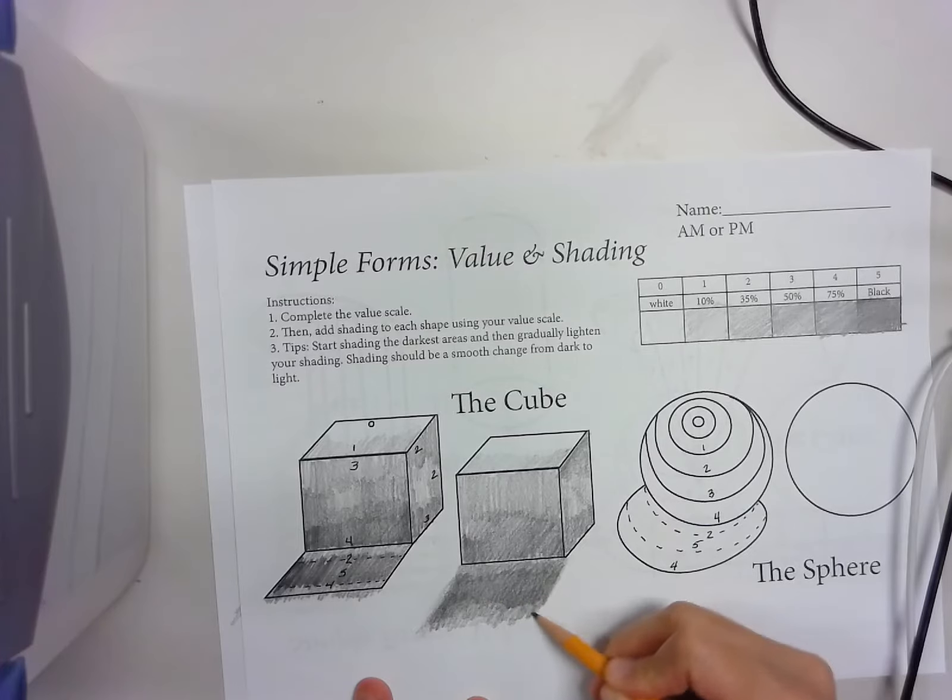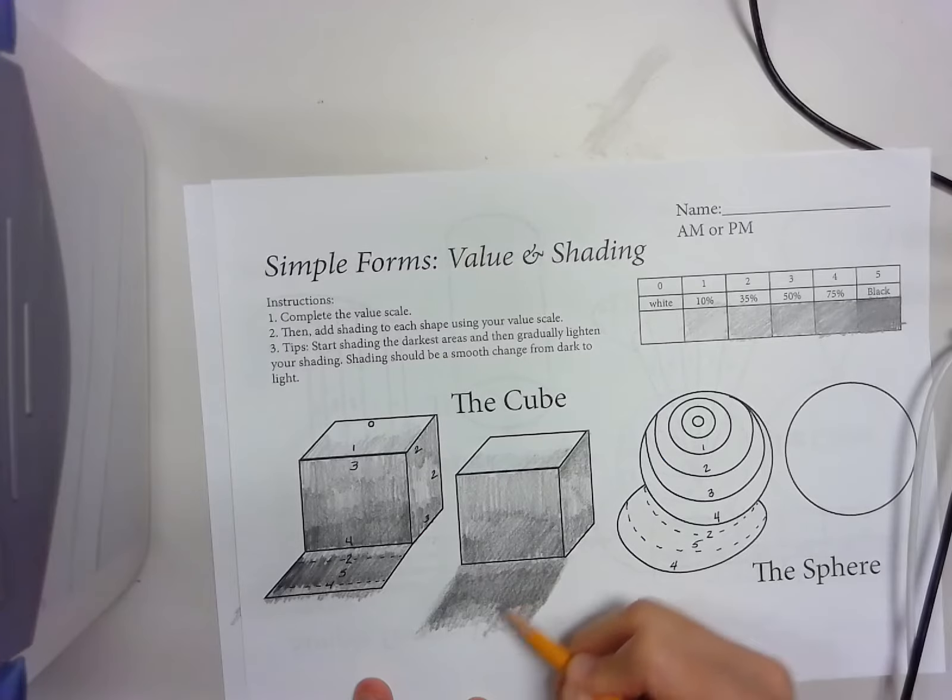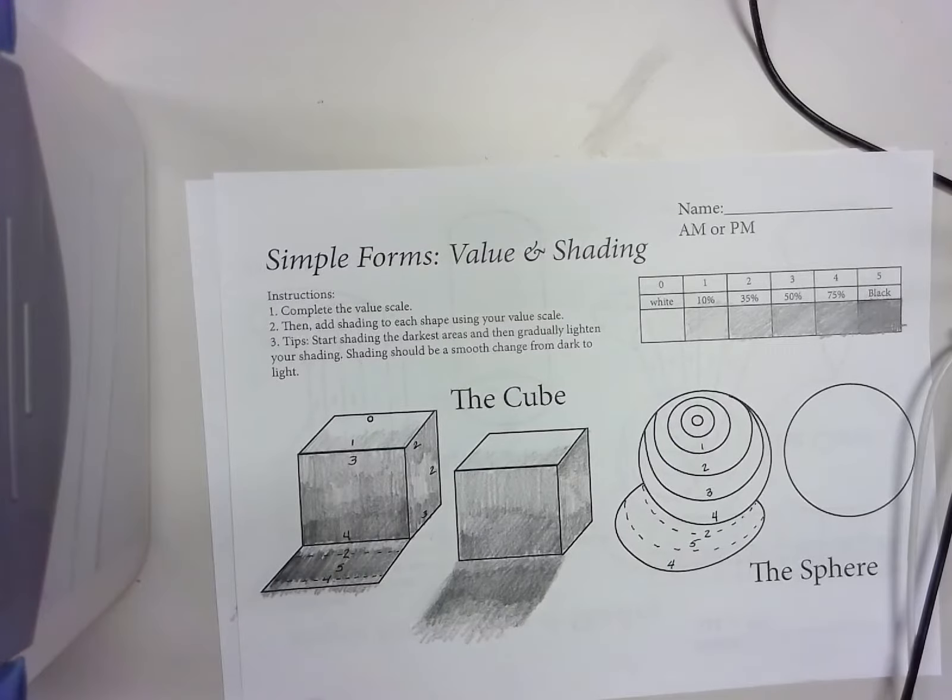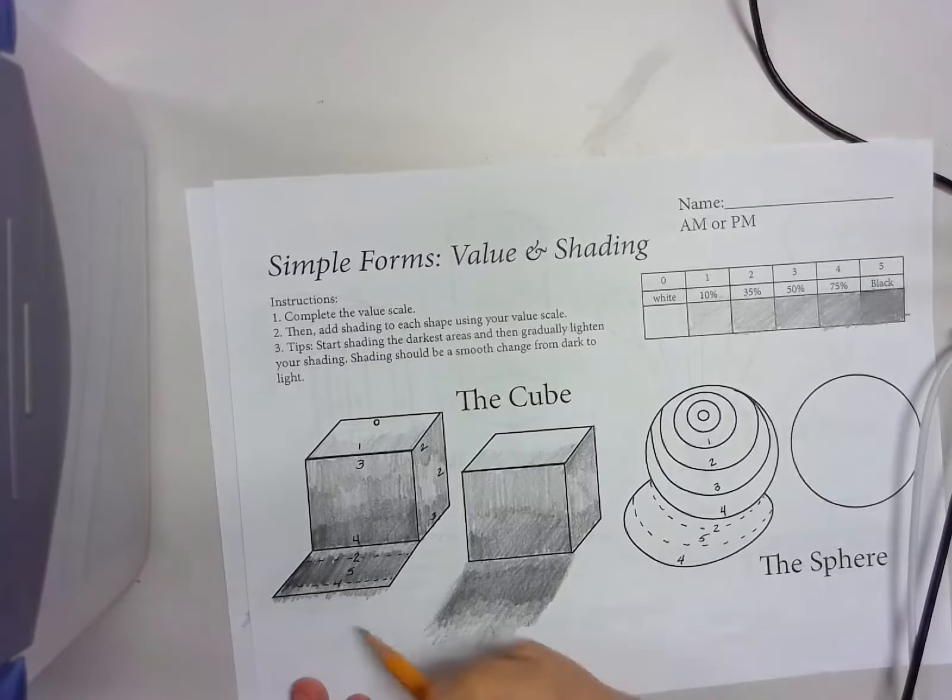That should be gradual. See, I don't want it to be abrupt, so I need to really go back in and make it look like it's changing gradually. I'll have a longer shadow. That looks a little bit better than that one.